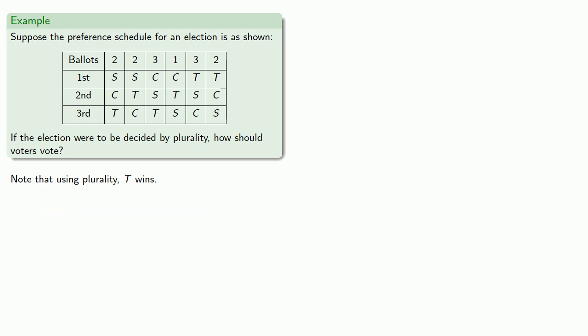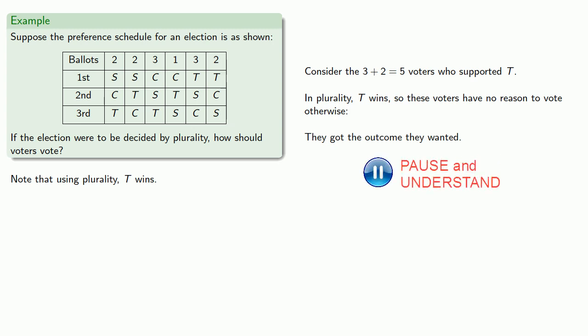So now the question to ask is, if you could change your vote after, would you do so? So let's consider, to begin with, the 3 plus 2, these 5 voters who supported T. In plurality, T wins, so these voters have no reason to vote other than how they did. They got the outcome they wanted, and hopefully they'll get what they deserve.